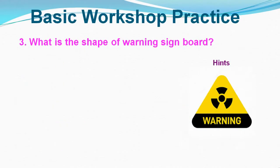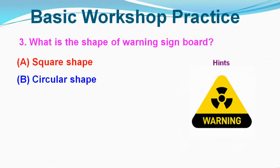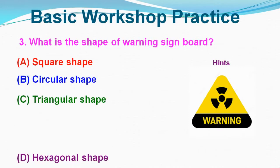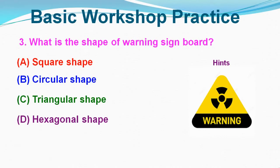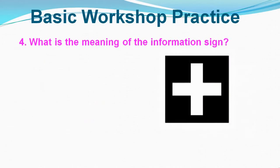Question No. 3: What is the shape of a warning sign? Option A: Square Shape, Option B: Circular Shape, Option C: Triangular, Option D: Hexagonal Shape. Correct answer is Option C, Triangular Shape.